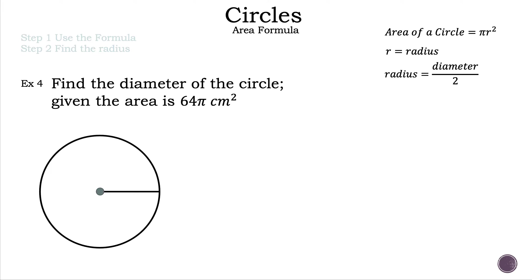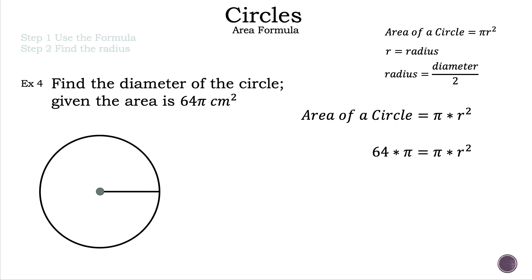Now let's move to example four. The question: find the diameter of the circle given the area is 64 pi centimeters squared. Like example three, we've been given the area and need to work backwards — this time to find the diameter. Before we start, write down the area formula: pi times radius squared. We substitute 64 pi on the left-hand side for area and bring down pi times radius squared.